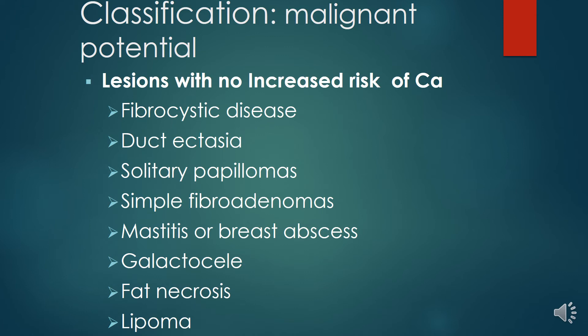Lesions which increase the risk of cancer include fibrocystic disease — a painful condition — and duct ectasia which can lead to discharge. Solitary papillomatosis causes single duct discharge. Simple fibroadenomas give lumpiness to the breast. Mastitis and breast abscesses can lead to pus discharge from the skin. Galactoceles are found after lactation, fat necrosis follows trauma, and lipomas can be solitary or part of Dercum's disease, which gives lipomas in all parts of the body.